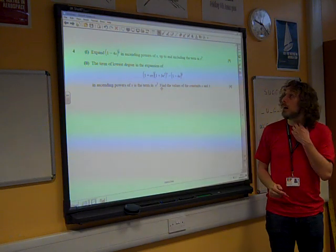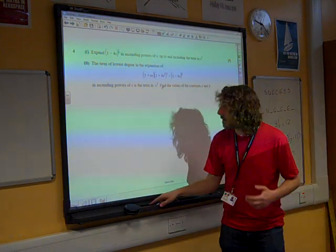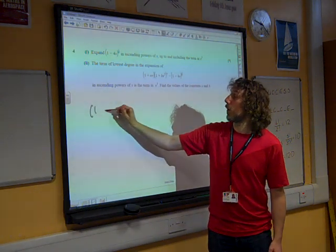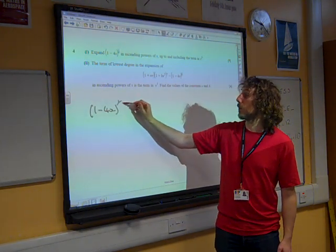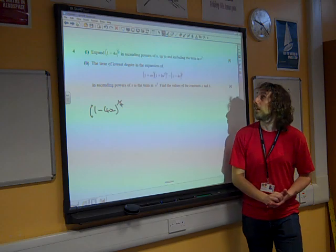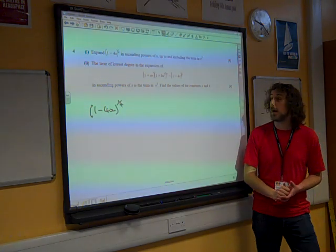Question four on the binomial expansion, five marks to start with. Expand (1 - 4x) to the power of a quarter in ascending powers of x up to and including the term in x cubed.